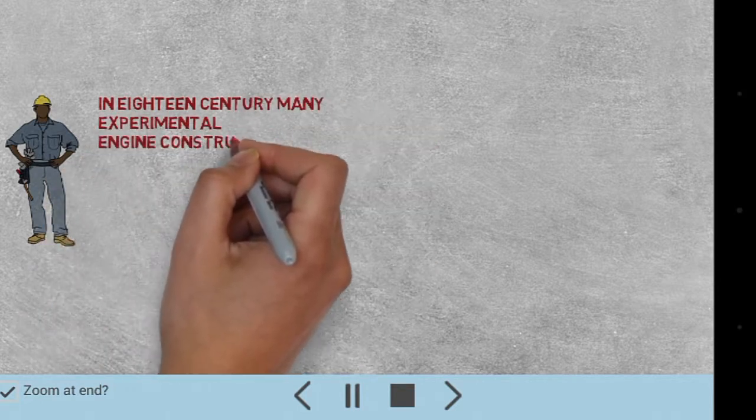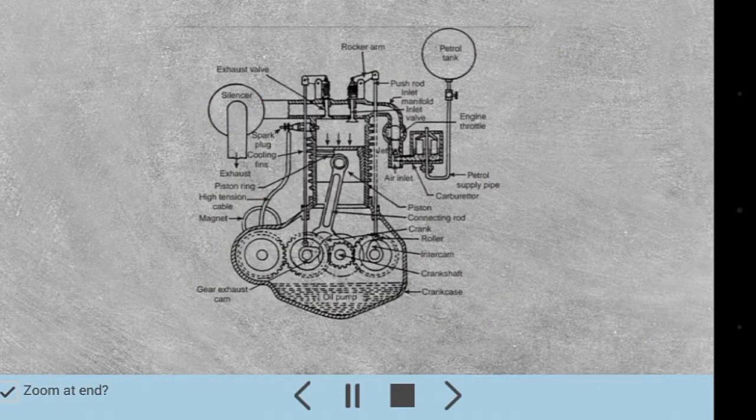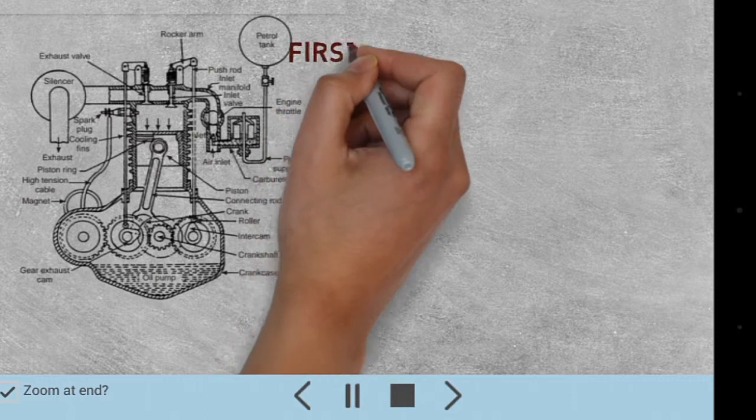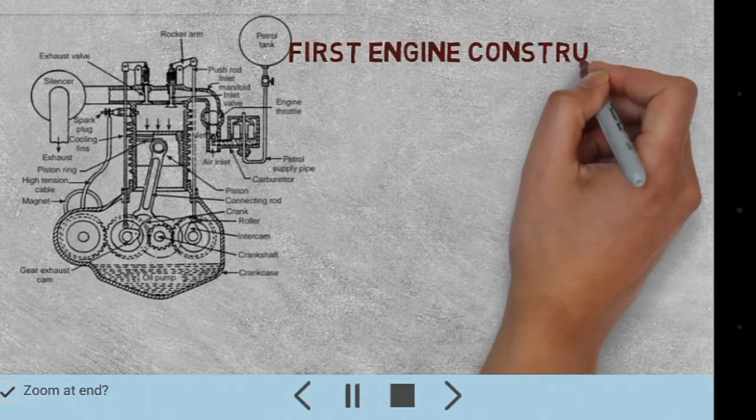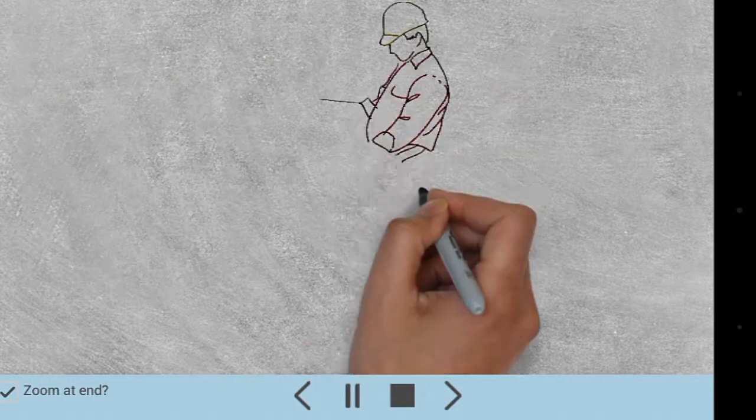Many of them were not workable. The first internal combustion engine was constructed by a great scientist, Dr. Otto, in 1879.